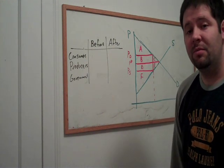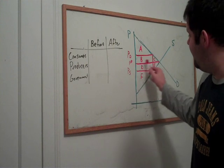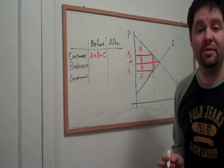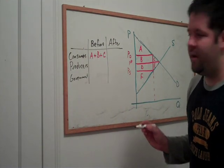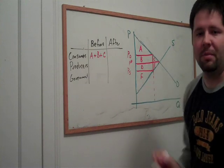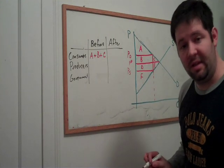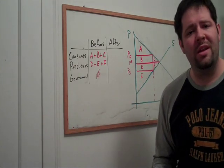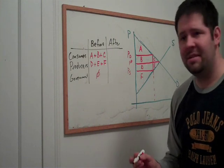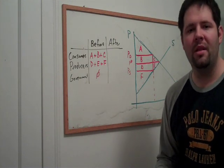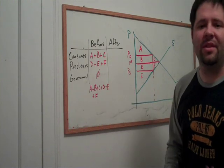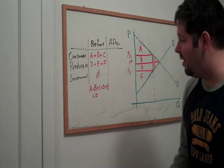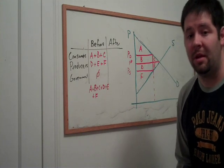Before the tax, consumer surplus was still the triangle above the equilibrium price up to the demand curve. Now that triangle was A plus B plus C. Producer surplus was the area below the price down to the supply curve. That area was D plus E plus F. And the government didn't take anything and didn't give anything away. So we could add up those areas and conceptually get a benchmark for what the total surplus was before the tax. So that area is this big triangle here. It was A plus B plus C plus D plus E plus F.